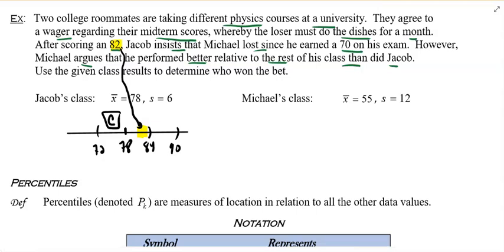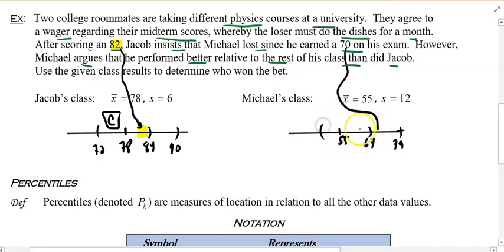While in Michael's class, 55. If you add a standard deviation, that is 67. Add another 12, that is 79. You notice a score of 70 falls in the B range. This is the C, this is the B. Michael earned a B. And Jacob earned a C.